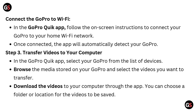Step 3: Transfer videos to your computer. In the GoPro Quick App, select your GoPro from the list of devices. Browse the media stored on your GoPro and select the videos you want to transfer. Download the videos to your computer through the app, and choose a folder or location for the videos to be saved.